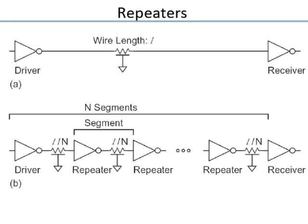For a long wire, resistance grows linearly with length as ρL/A, and capacitance also grows linearly with length as εWL/A. Both grow linearly, so the RC product — which determines delay — grows as the square of wire length. This quadratic growth means delay very quickly becomes very large.